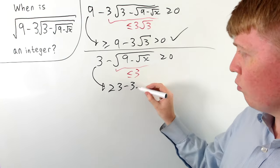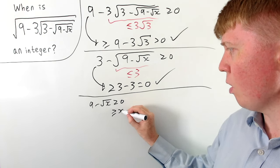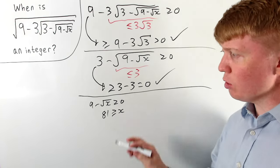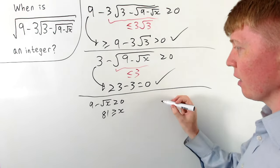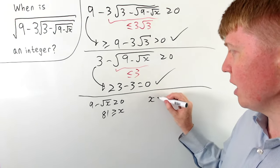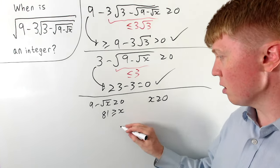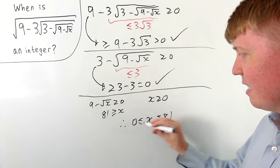Looking at the next square root term, we need nine minus the square root of x to be greater than or equal to zero. We can take root x to the right hand side and square to see that x has got to be less than or equal to 81. We also need the square root of x to be well defined, so we need x greater than or equal to zero. So our only constraints are that x must be between zero and 81.